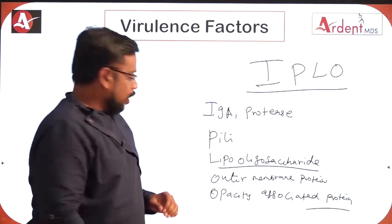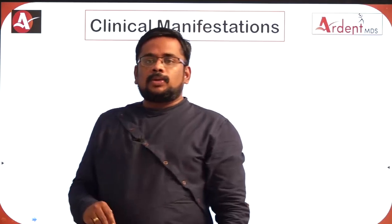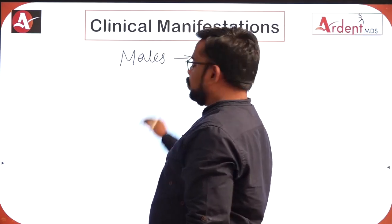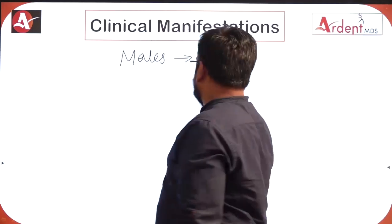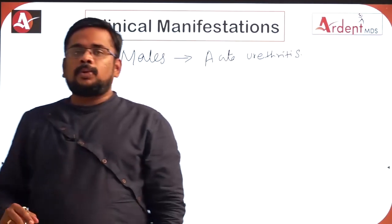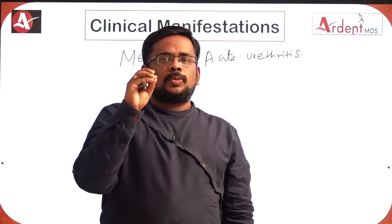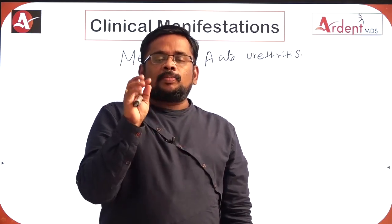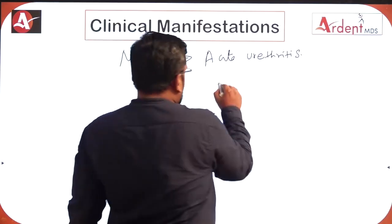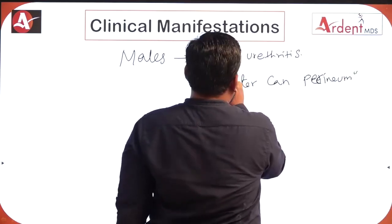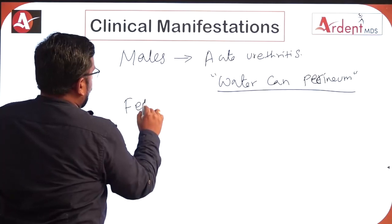Coming to clinical manifestations of Neisseria gonococci: it is a sexually transmitted disease. The most common manifestation in males is acute urethritis. If untreated, this leads to multiple periurethral discharges with sinuses, otherwise called water-can perineum.